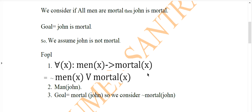As per the norms for the conversion of FOPL into conjunctive normal form (CNF), we have to remove the implies sign. This is the first law for conversion of FOPL into CNF. When we remove the implies sign, the rule is that the first predicate part gets a negation added, and at the place of the implies sign, we place an OR symbol. So for all X, men(X) implies mortal(X) becomes: negation men(X) OR mortal(X).